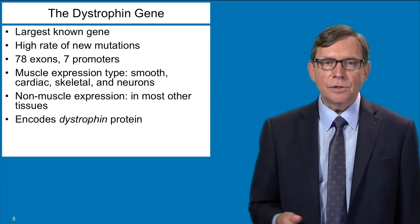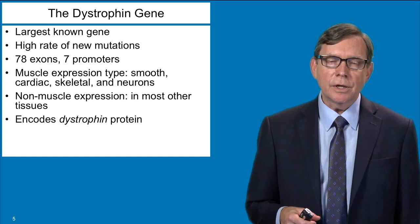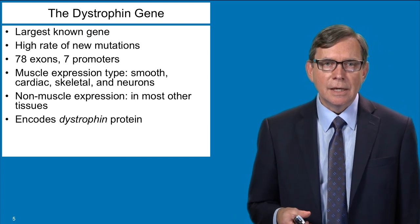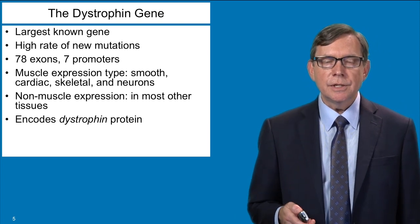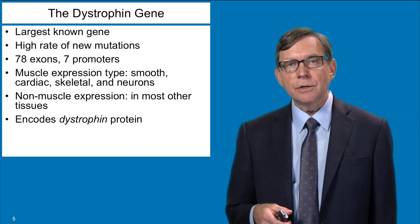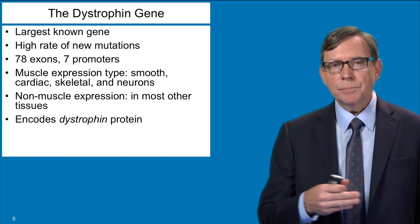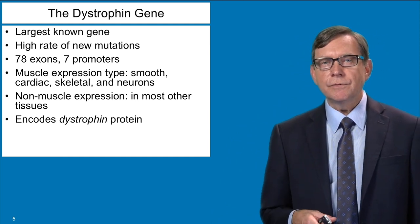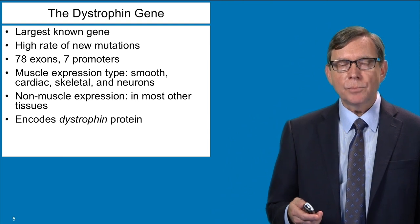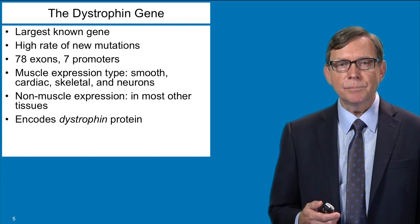The gene is divided into many different exons, and there's a variety of promoters or gene regulatory elements that control production of a variety of different forms of dystrophin. The largest form of dystrophin is found in all different types of muscles — smooth muscle, cardiac muscle, skeletal muscle — as well as some neurons in the central nervous system. Some of the promoters make shorter forms of dystrophin found in non-muscle tissues, but all of these different proteins that come off this very complex gene are referred to as dystrophin proteins.